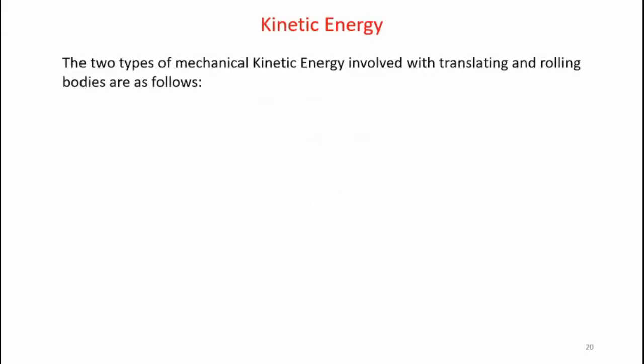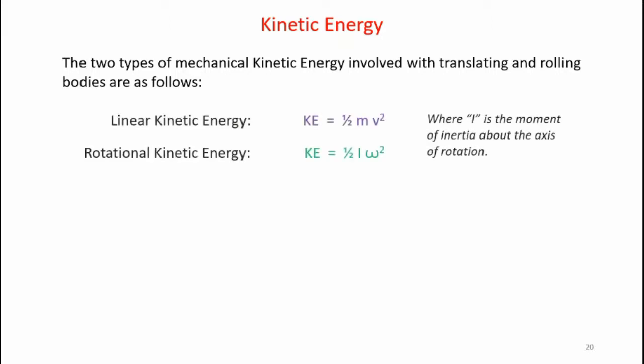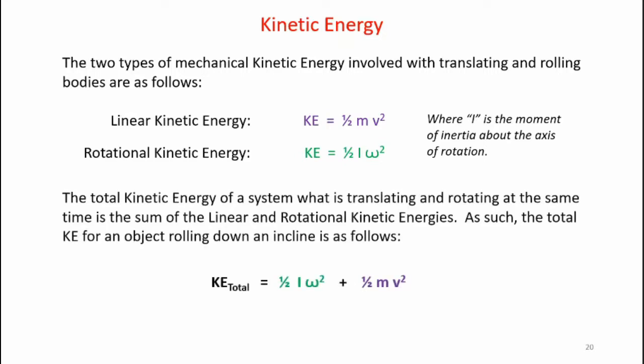Now let's look and see how kinetic energy comes into play with a translating and rolling body. Since the body is translating and rolling at the same time, two kinetic energies come into play. Linear kinetic energy, KE equals one-half mv squared, should look pretty familiar. There's also rotational kinetic energy where KE equals one-half times the moment of inertia times the rotational velocity squared. Since the object is moving in translation and rotation at the same time, the total kinetic energy is the sum of those two kinetic energies. The total KE equation becomes KE total equals one-half moment of inertia times omega squared plus one-half mv squared.